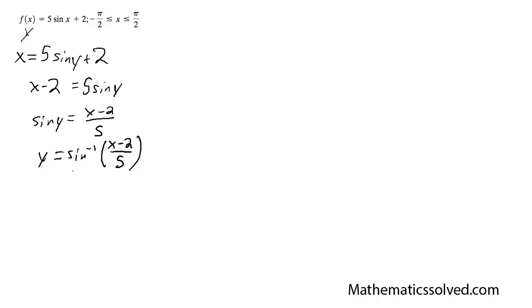So the domain for inverse sine in this case is x can be anything between negative 1 and 1. Which means in order to solve this, I'm going to do x minus 2 over 5 is equal to negative 1, and I'm going to do x minus 2 divided by 5 is equal to 1.